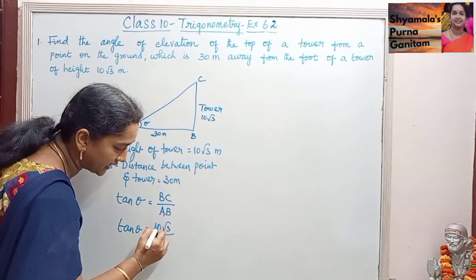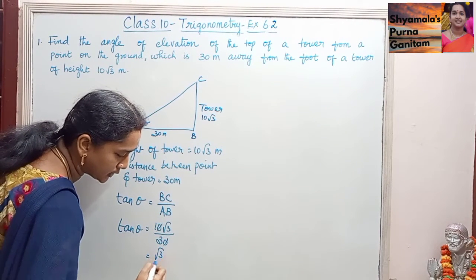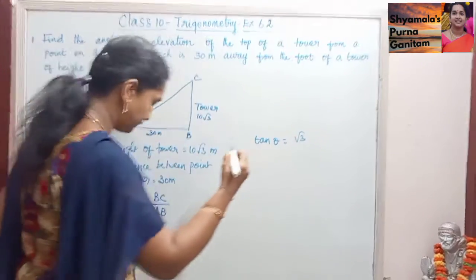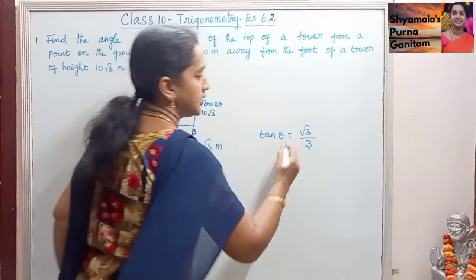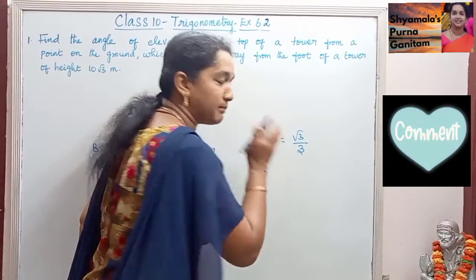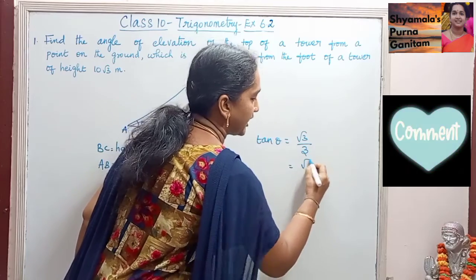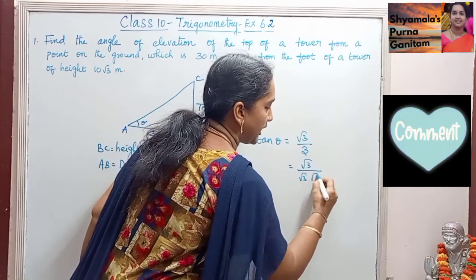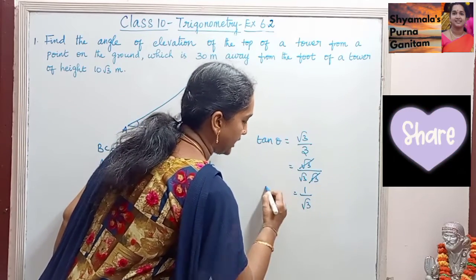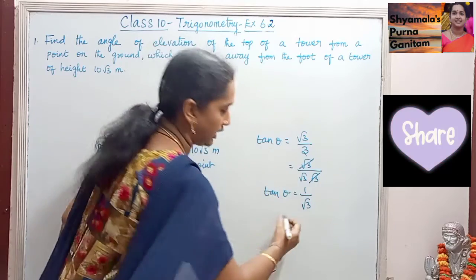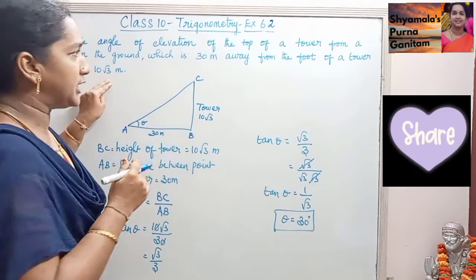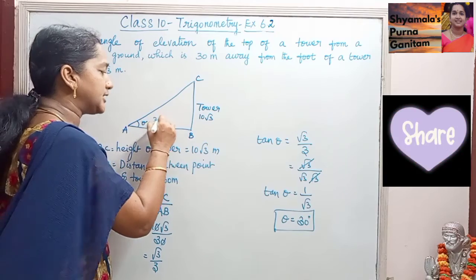If we simplify this, the zeros cancel, giving us root 3 by 3. We do not have a standard angle for root 3 by 3, so we simplify by writing 3 as root 3 into root 3. Cancelling one root 3, we get 1 by root 3. So tan theta equals 1 by root 3, which means theta equals 30 degrees. The angle of elevation of the top of the tower is 30 degrees.